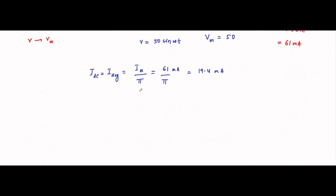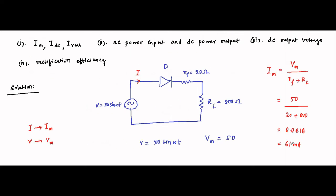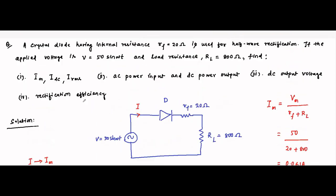The RMS value, also called the AC value, is Irms = Im / 2 for half wave rectifiers. For full wave rectifiers it is Im / √2, and the DC value is 2·Im / π. Always remember: for half wave rectifiers, Idc = Im/π and Irms = Im/2. When there is no forward resistance, you can use the same for voltage: VDC = Vm/π and Vrms = Vm/2. Here, Irms = 61 mA / 2 = 30.5 milliampere.